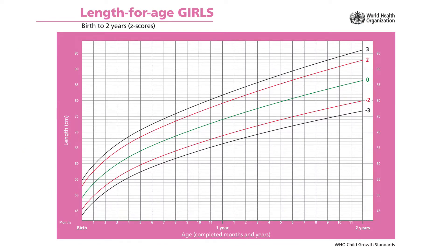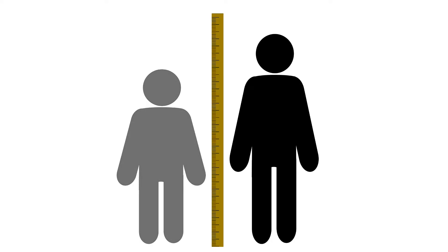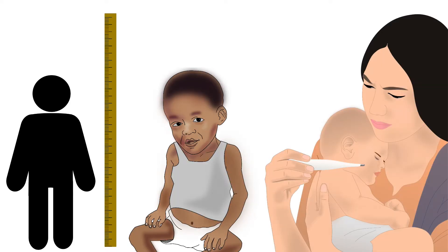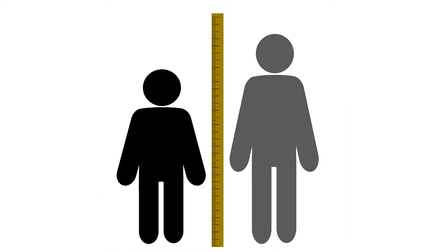Let's learn more about the first type of Z-score growth chart: the length for age growth chart. This indicator can help identify children who are stunted or short. Such children might have had prolonged undernutrition or repeated illness. Children who are tall for their age can also be identified.